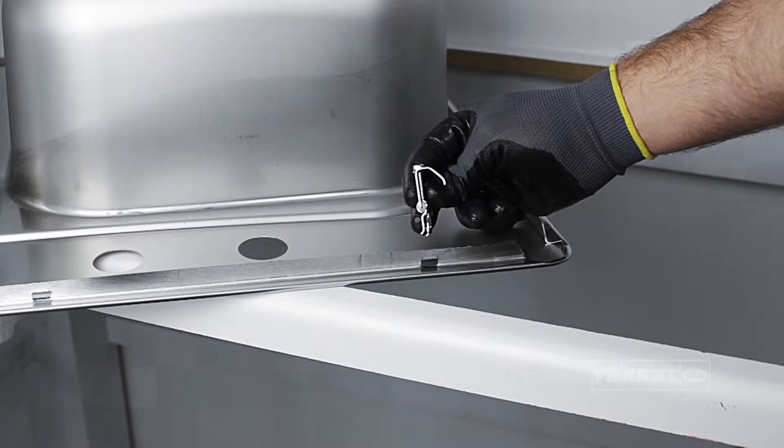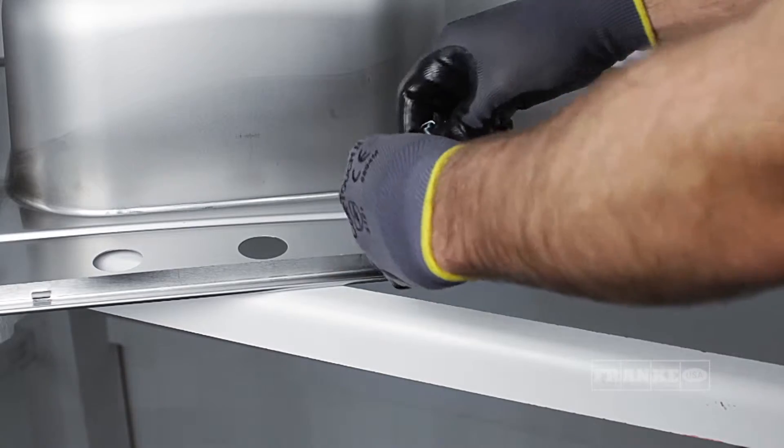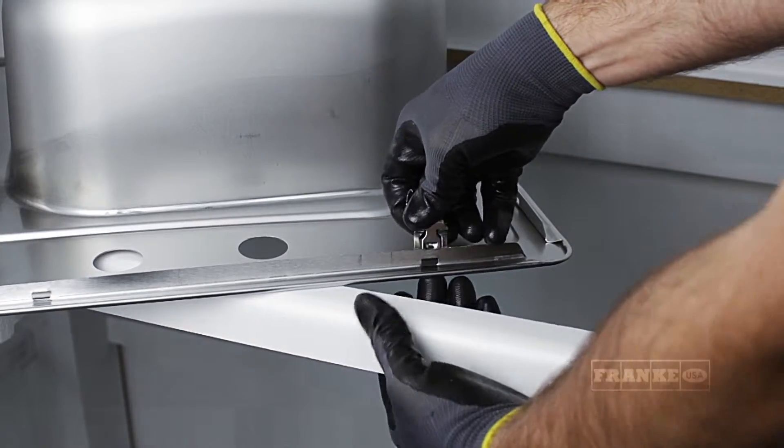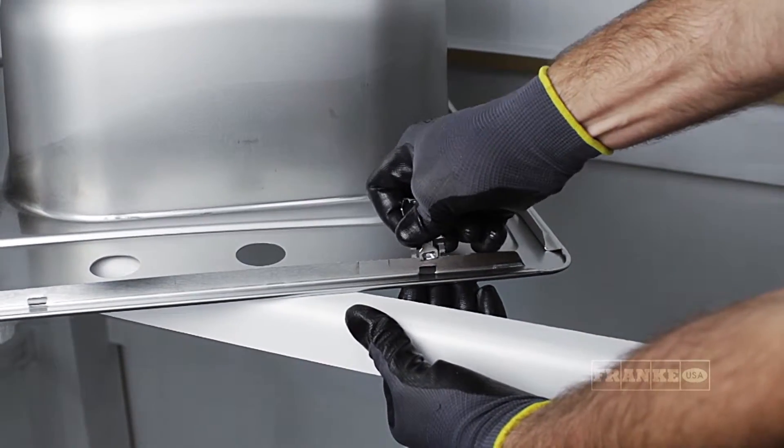Now attach the clips over the pre-drilled mounting slot in the sink rail. Make sure you reference your included diagram for clip placement.